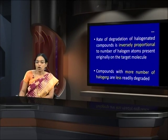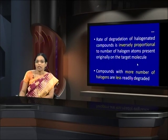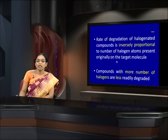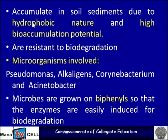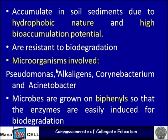Why? Because the halogen group must first be replaced by an OH group, and then opening of the aromatic ring can take place. These compounds accumulate in soil sediments due to their hydrophobic nature and high bioaccumulation potential, making them resistant to biodegradation.